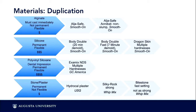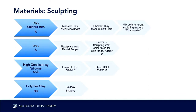Stone and plaster are also duplication methods. Stone is not great for anything with undercuts — if you have a solid piece cast into it, it can be very hard to get out. I only recommend stone if you are not going to have undercuts, but it is a permanent duplication material.